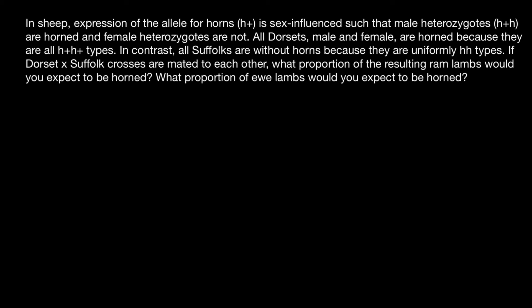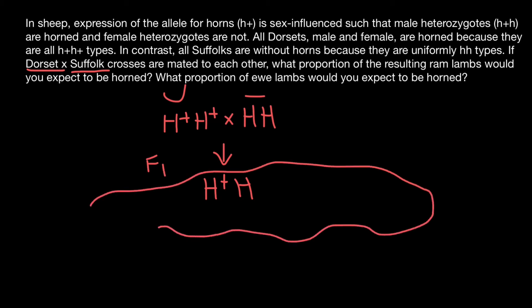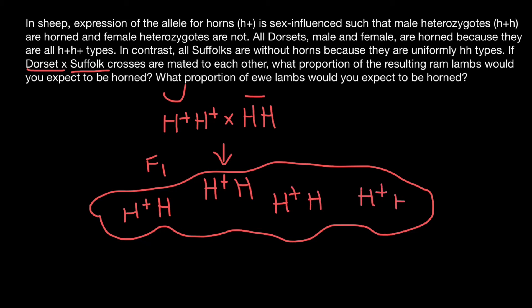According to our problem, we have to cross the Dorset breed, which is H+,H+, with the Suffolk breed, which is H-,H-. The Dorset has horns and the Suffolk doesn't have horns. One hundred percent of the offspring are going to be heterozygous, so they are going to be H+,H-. Imagine that this F1 generation is a herd where we can find many animals, but all of them, regardless of their sex, are going to be heterozygous H+,H-.